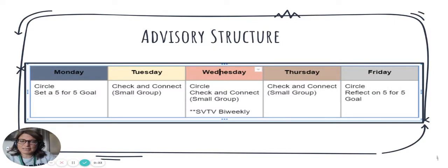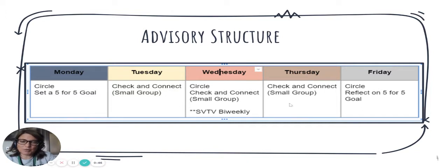This is a schedule for advisory. On Mondays, Wednesdays, and Fridays, advisories run circles, which help build community. We also set five-for-five goals each Monday and track our progress throughout the week. Our five-for-five goals are one thing that we're working on and trying to achieve for five days.